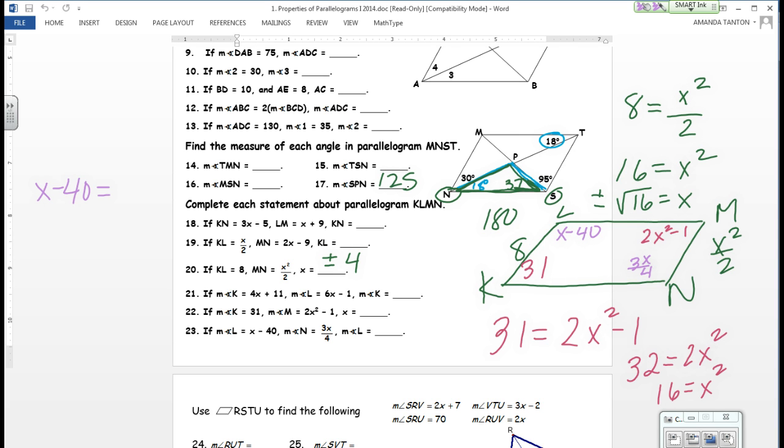So x minus 40 equals 3x over 4. There's a couple things you can do. You can multiply both sides by 4 or you can put this over 1 and cross multiply. It's the same. Yeah, let's do it. It's the same thing. Ready? Let's multiply both sides by 4. 4x minus 40 equals 3x.